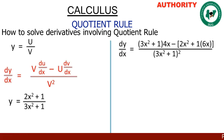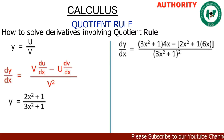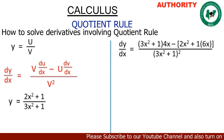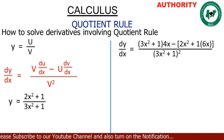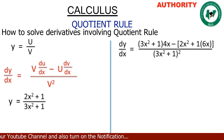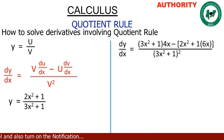Applying the quotient rule: dY/dx equals V, which is (3s² + 1), multiplied by the derivative of U. Our U is 2s² + 1, so the derivative of U gives us 4x. Then minus, open bracket, our U which is (2s² + 1), multiplied by the derivative of V. The derivative of V, which is (3s² + 1), gives us 6x.